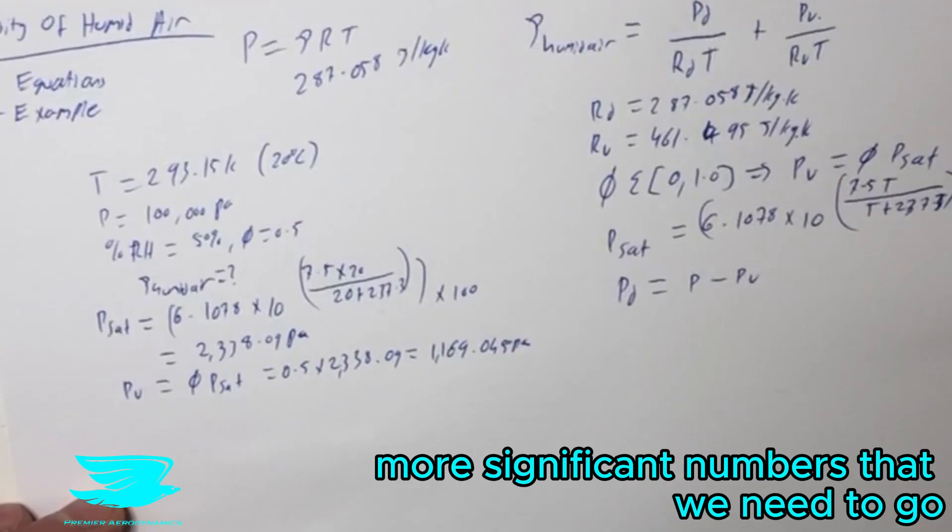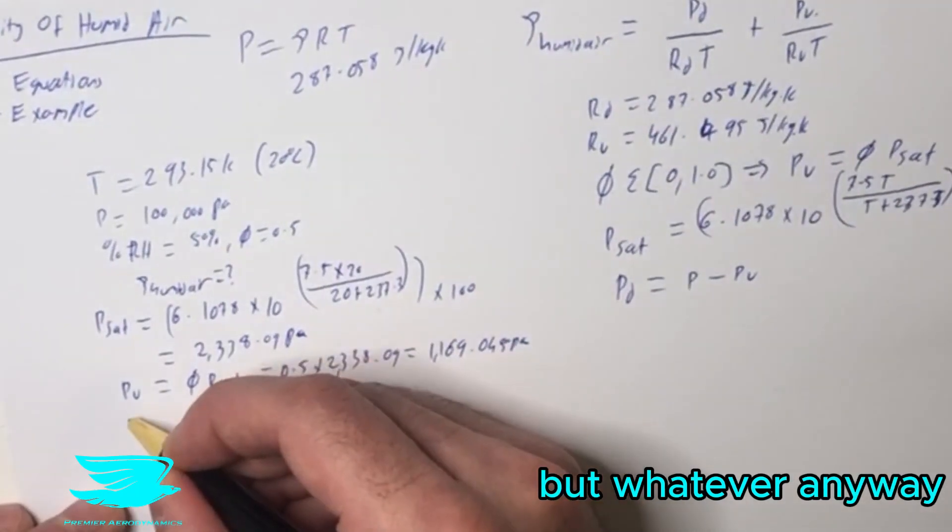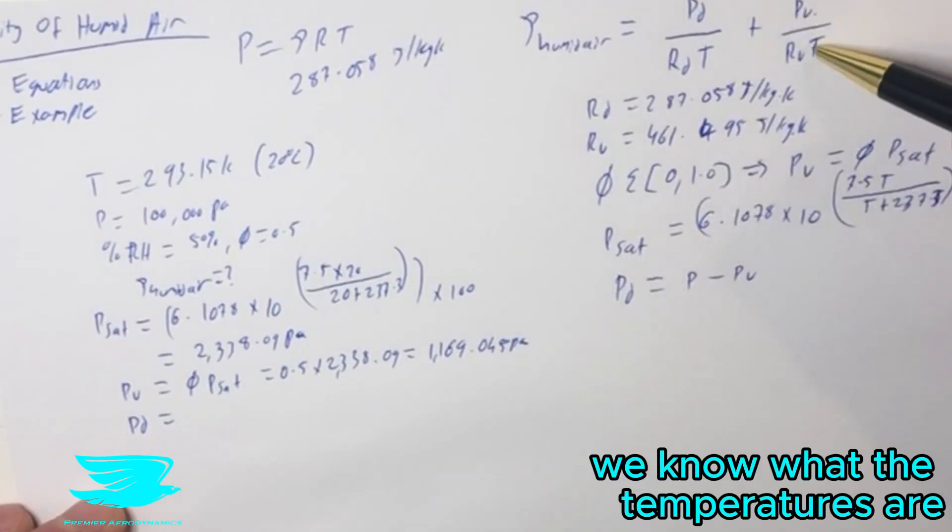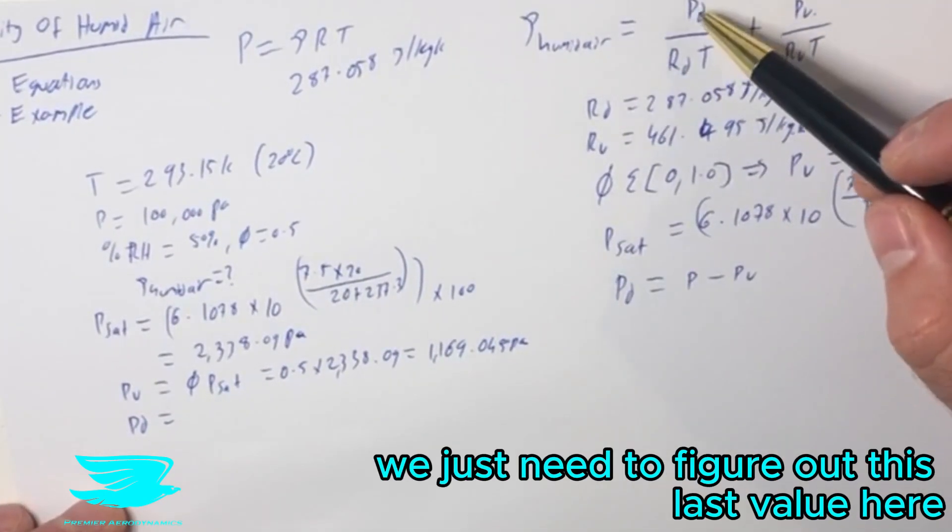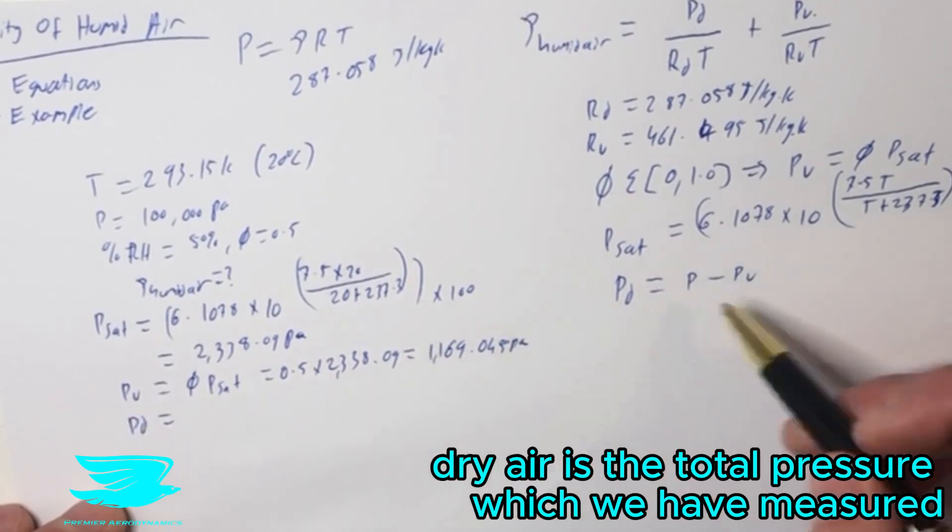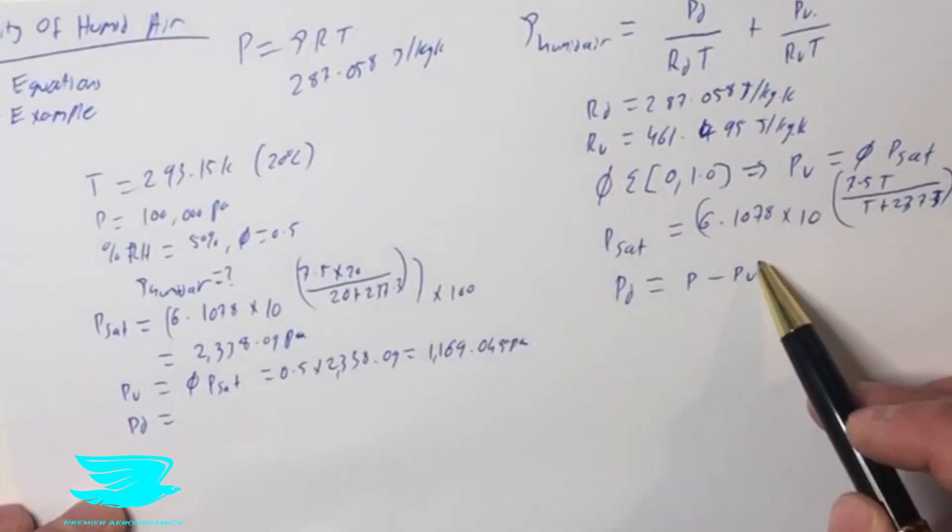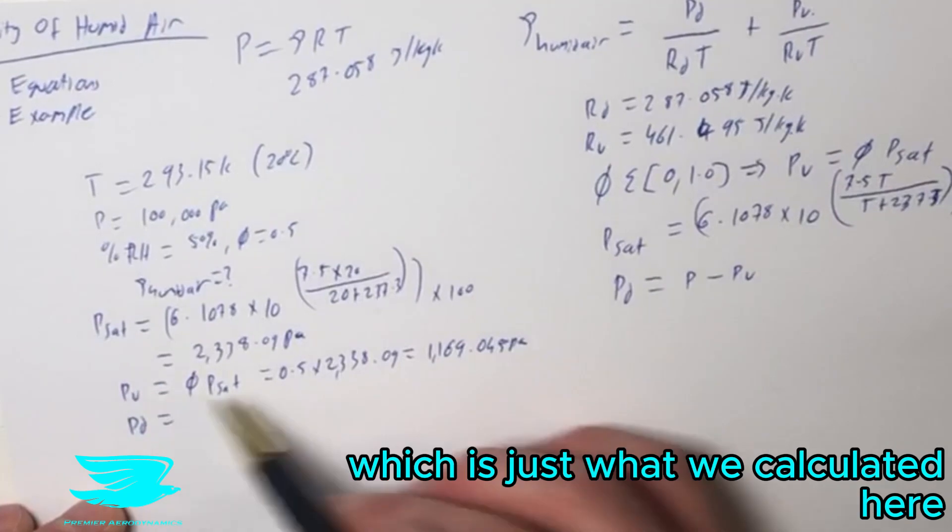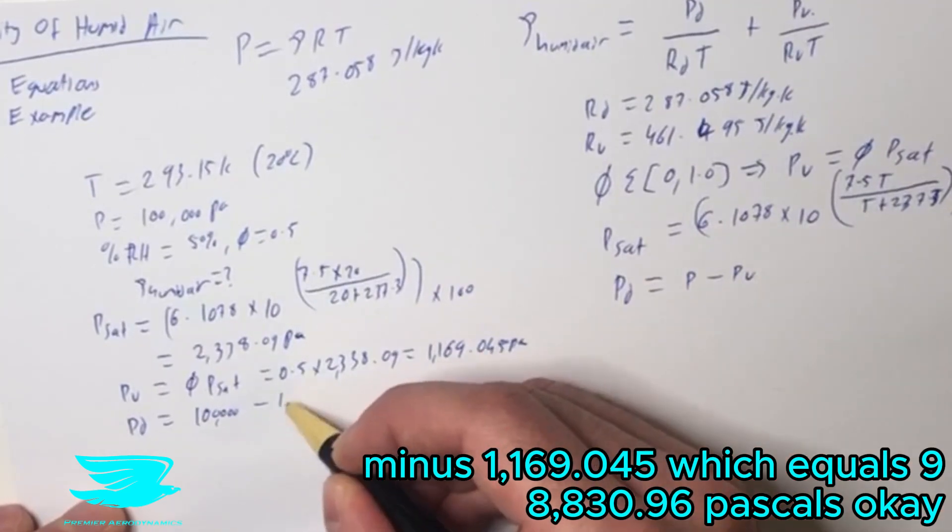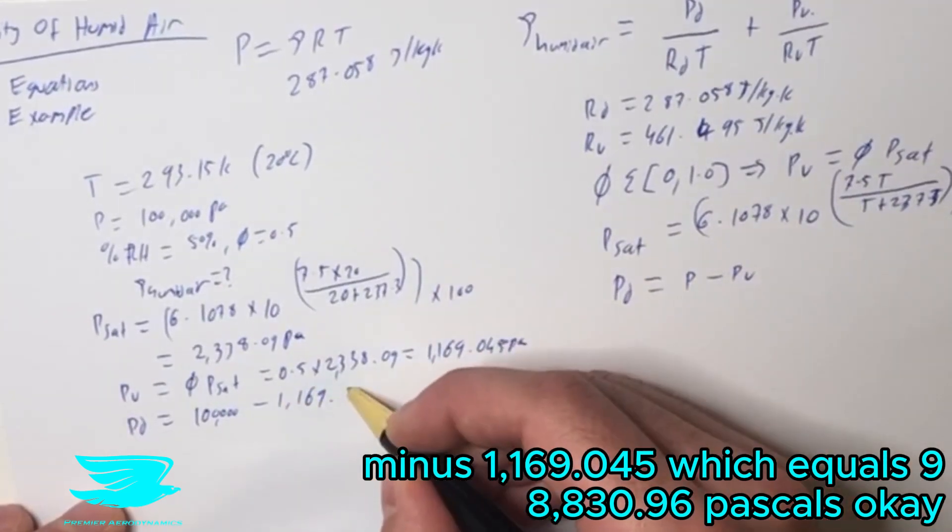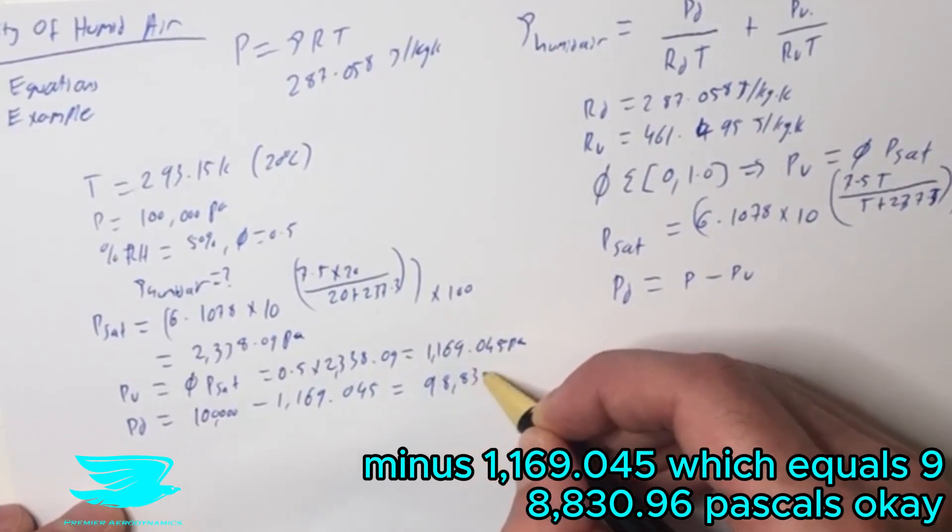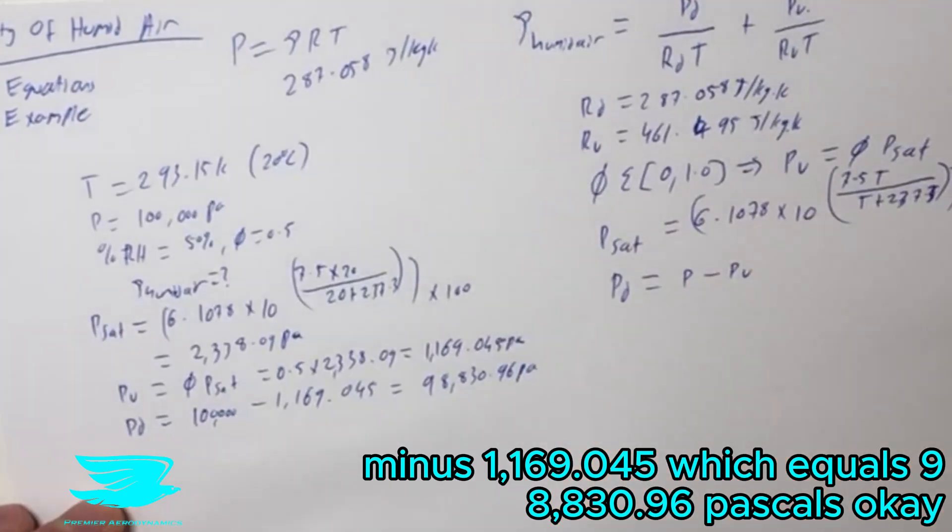That's probably more significant numbers than we need to go, but whatever. The pressure due to the dry air now, we have figured out what the pressure due to the vapor is, we know the temperatures, we know the gas constants. We just need to figure out this last value. The pressure due to the dry air is the total pressure, which we have measured, minus the pressure due to the water vapor, which is 100,000 minus 1169.045, which equals 98,830.96 Pascals.